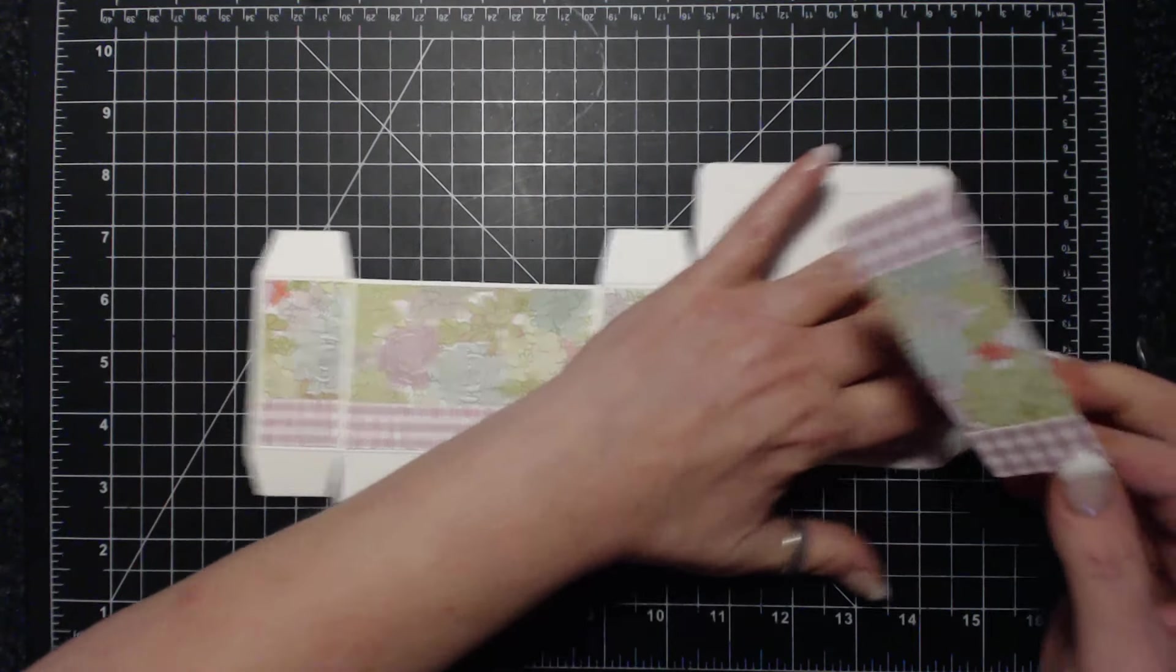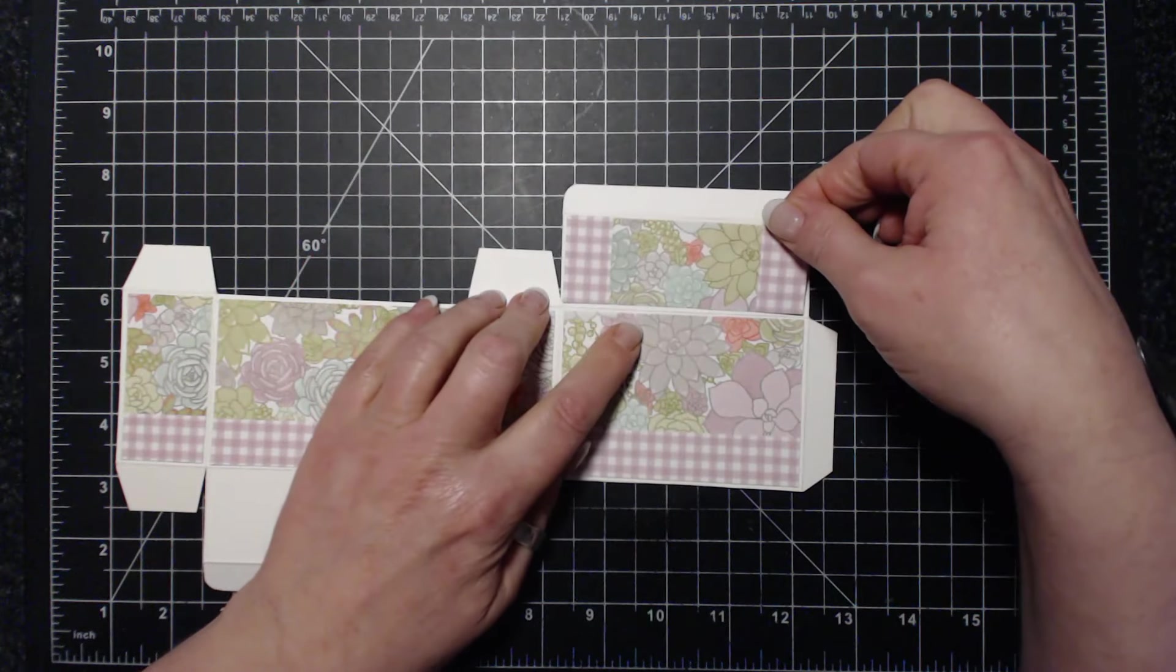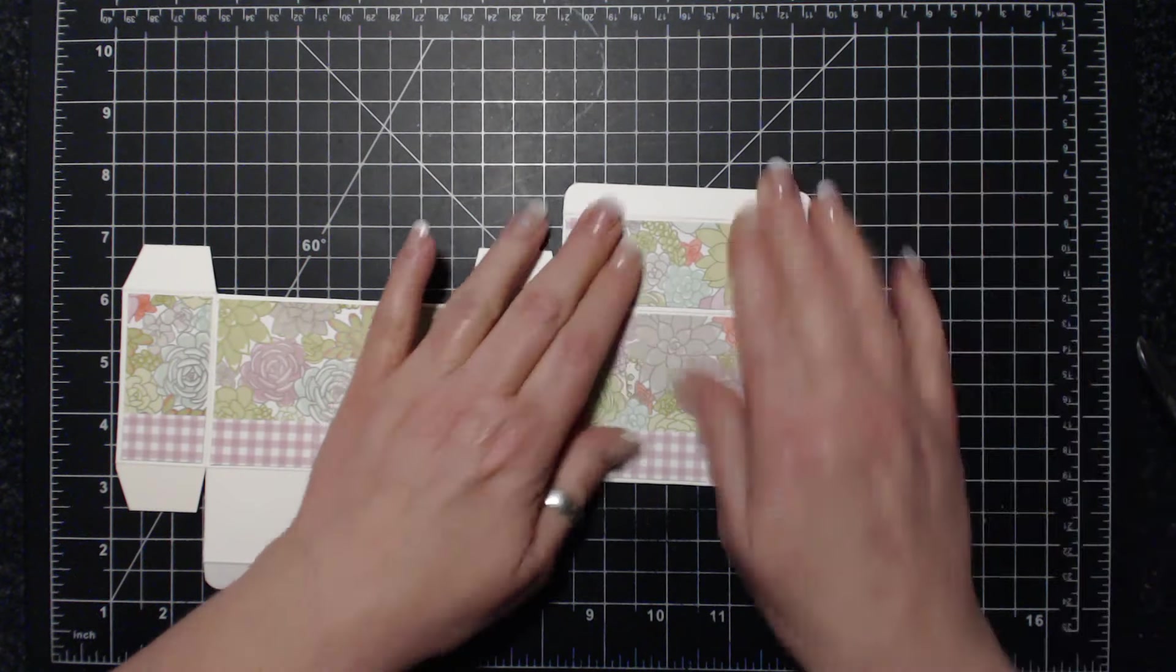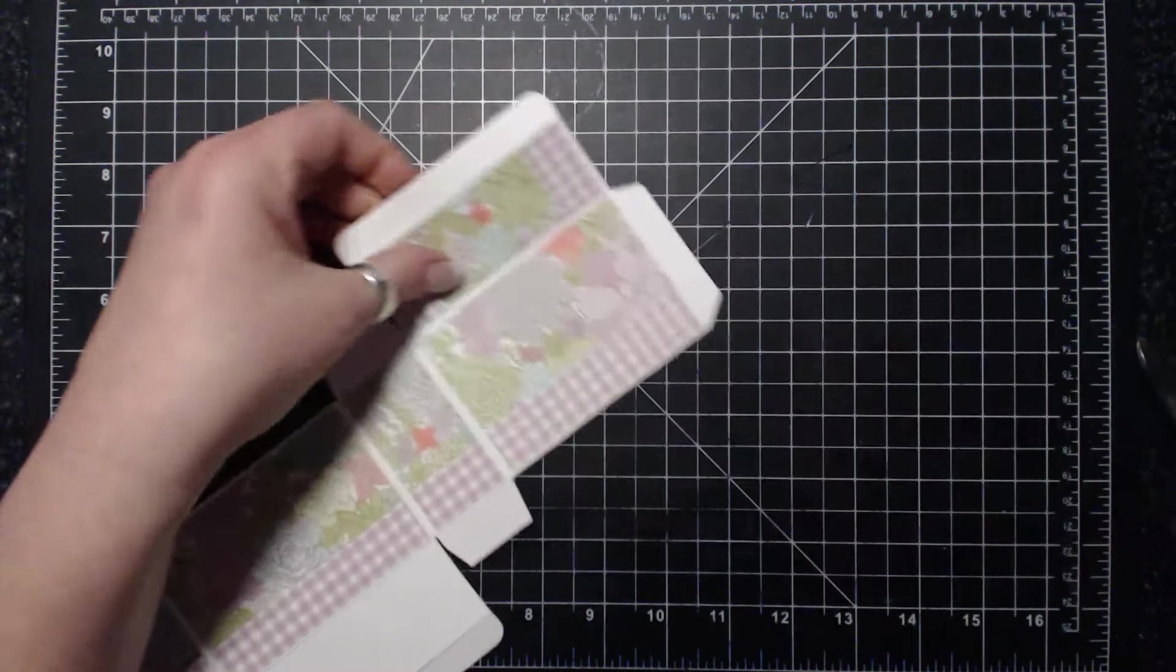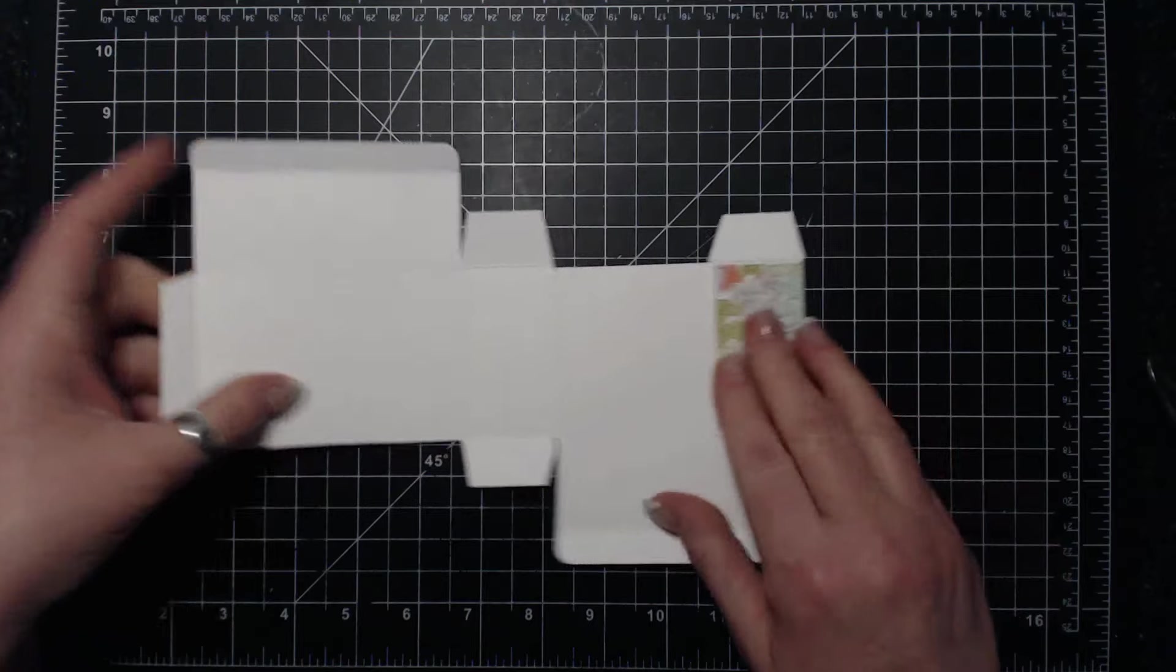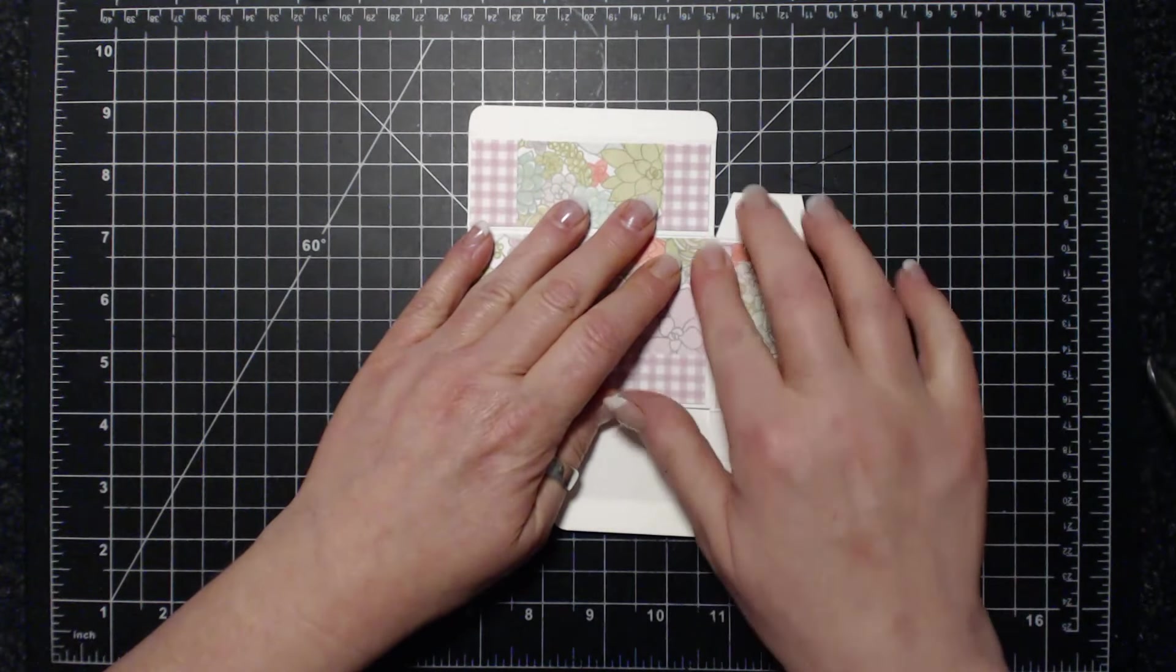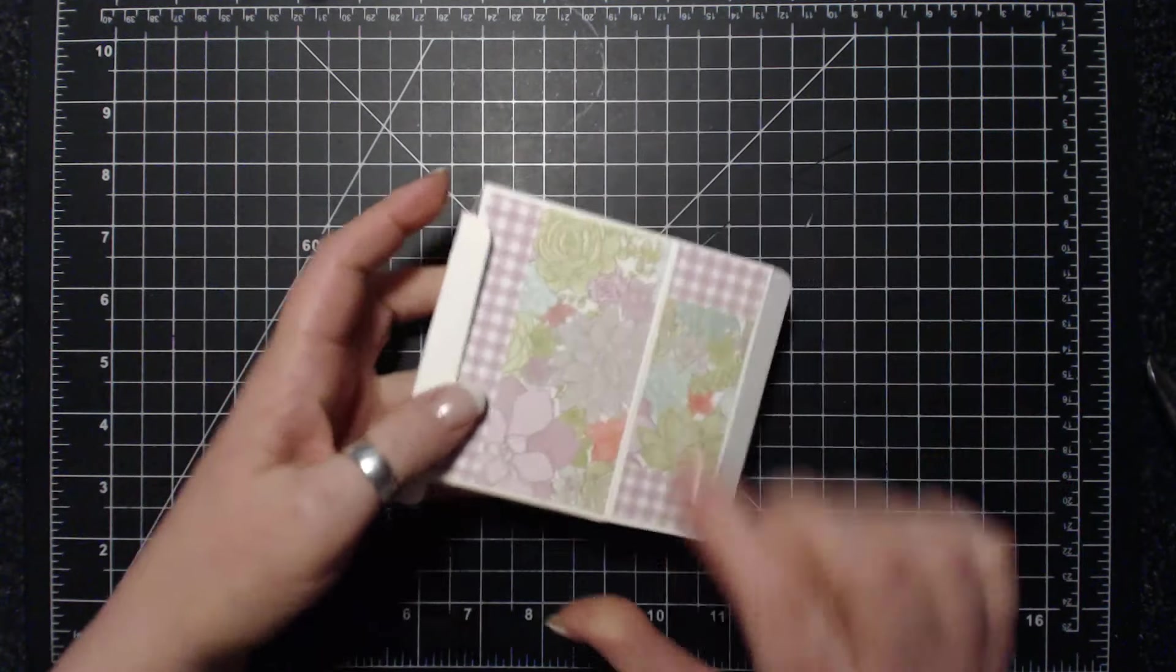You need two of those. And the last piece is the lid, and that is three and seven eighths by one and three eighths. I did put gingham on both edges. Now I'm going to put the box together. A little bit of fast fuse here. Flip that over like that, make sure it's got a nice seal. The back is going to go in.